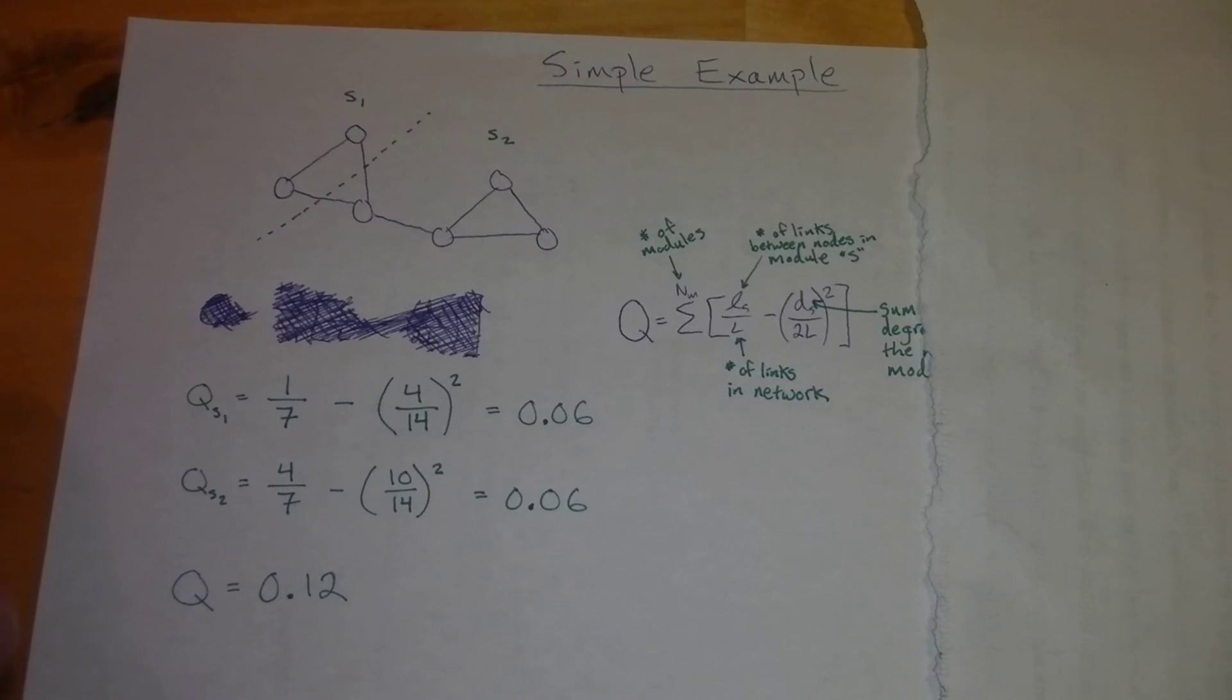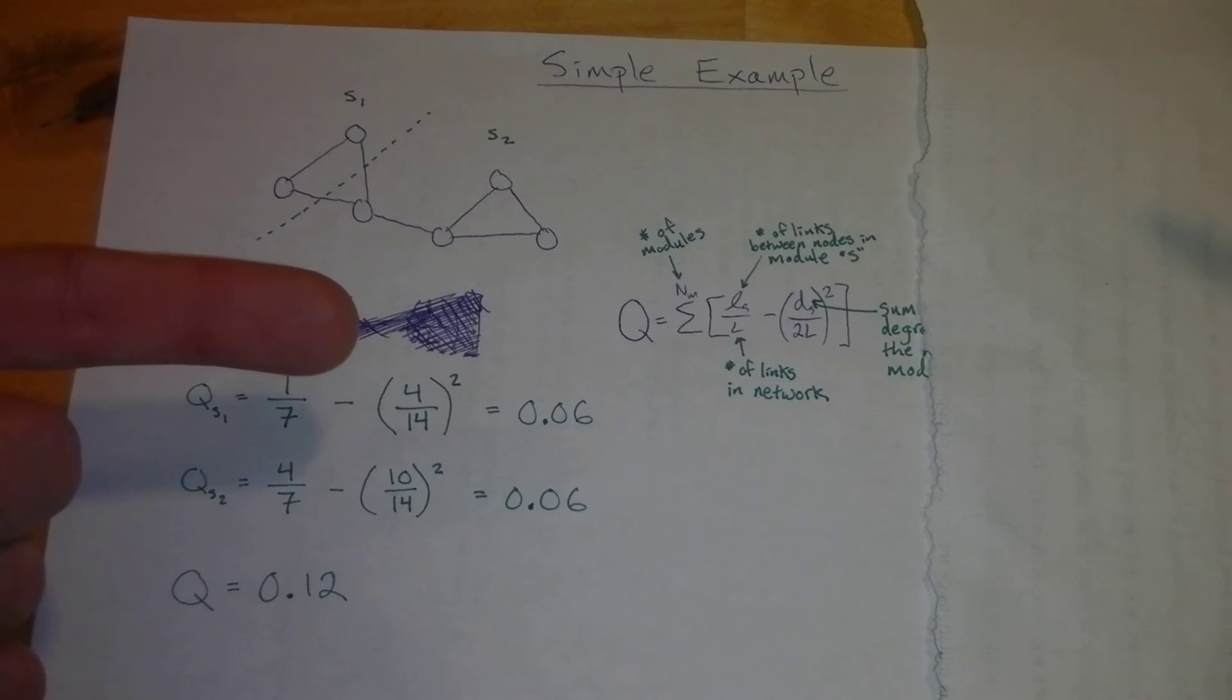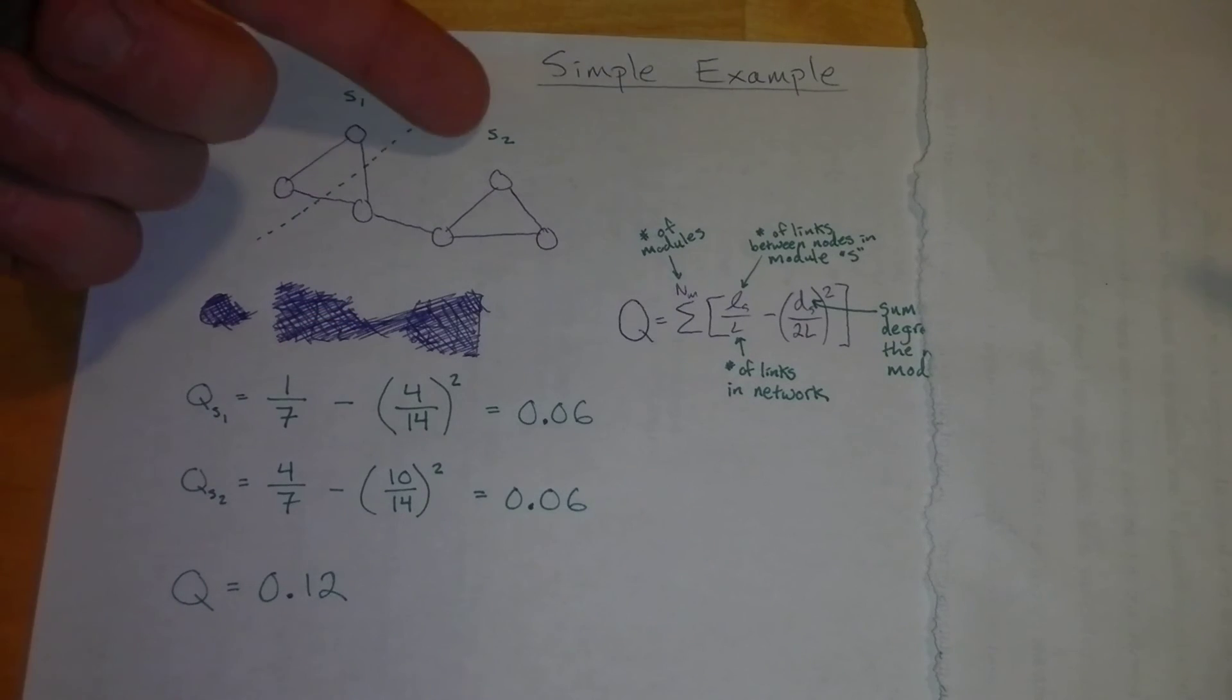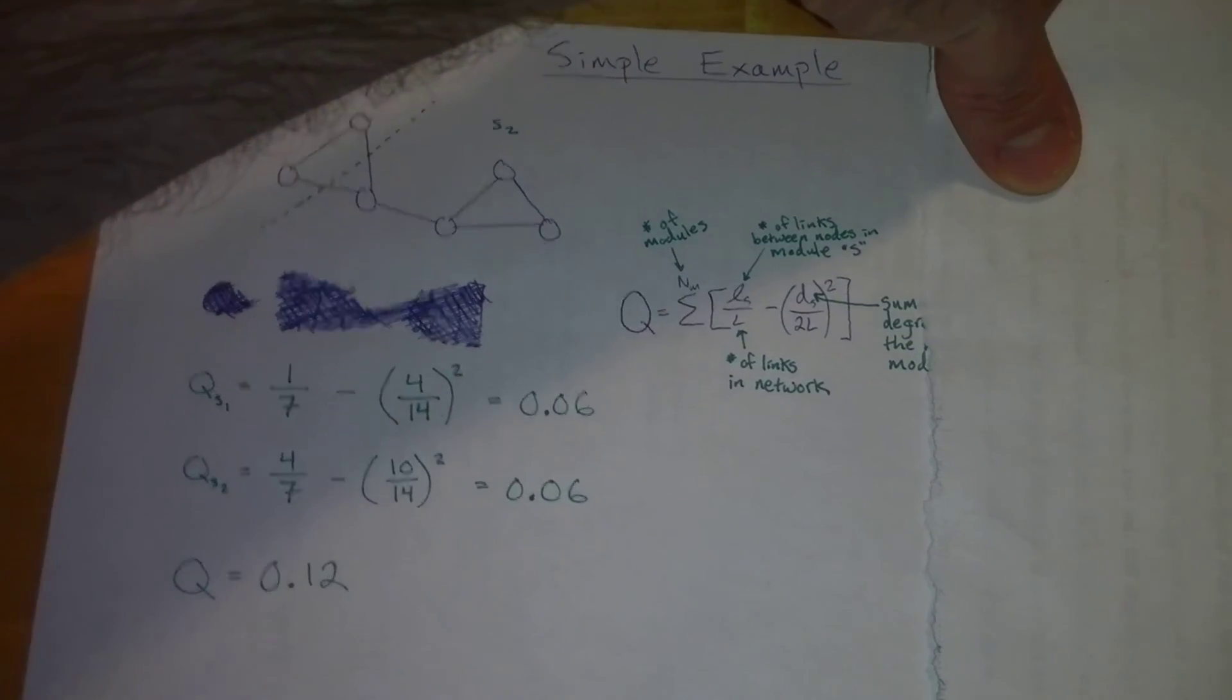We've partitioned it into S1 and S2. We've got one link divided by the number of links in the network, which is 7. Now we sum up the number of degrees within the nodes in each module: 1, 2, 3, 4. That matches up with our equation. Calculate it out, and then we repeat the same thing with the second module. We end up getting a value of 0.12.